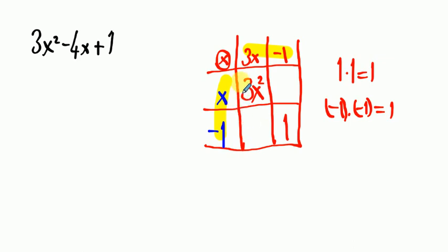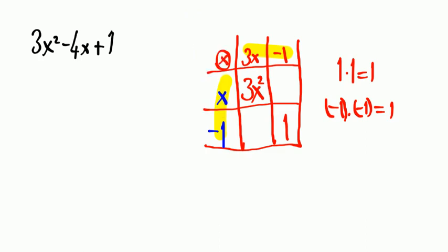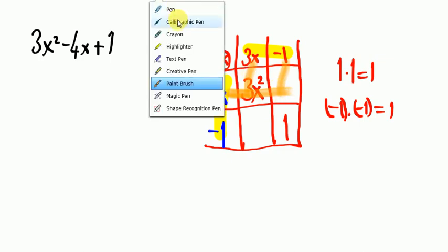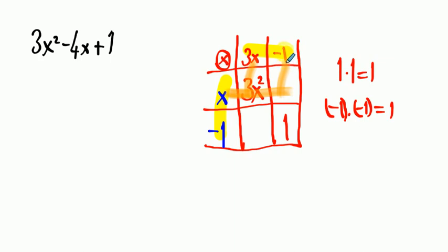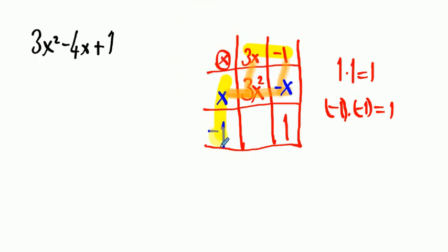x and 3x meet at one point in the frame. x and minus 1 meet at another point. So x times minus 1 equals minus x. And minus 1 goes right while 3x comes down — they meet in that box. So 3x times minus 1 will be minus 3x.